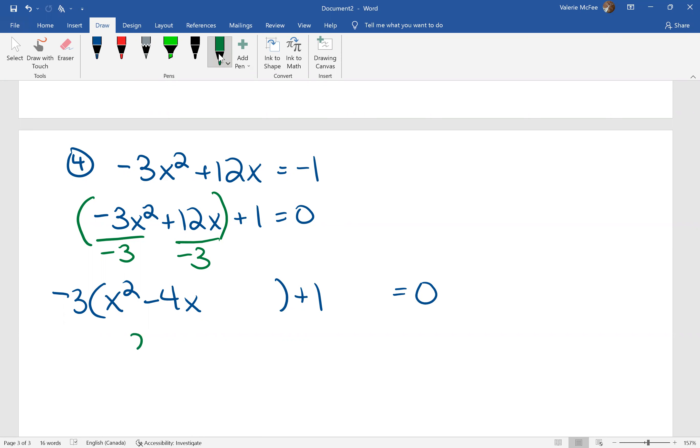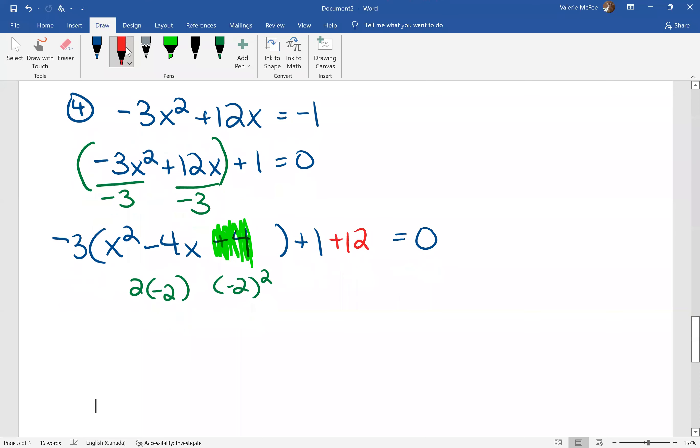We have to create our perfect square trinomial. Two times negative two gives us negative four. Negative two squared completes the perfect square trinomial. We have to balance the equation. So we have four times negative three.